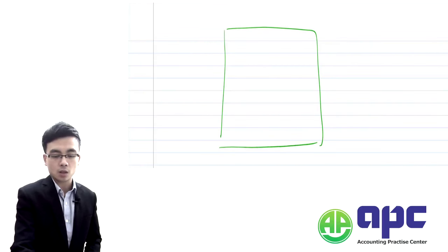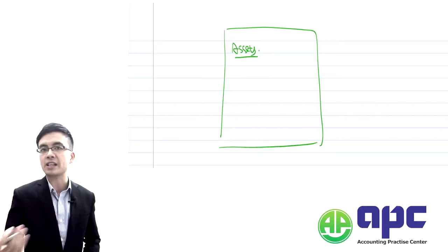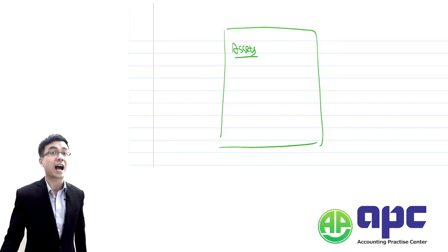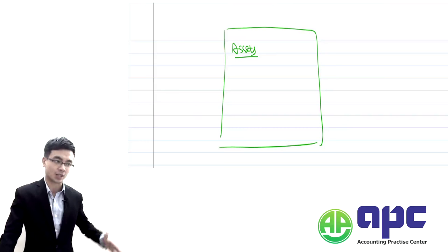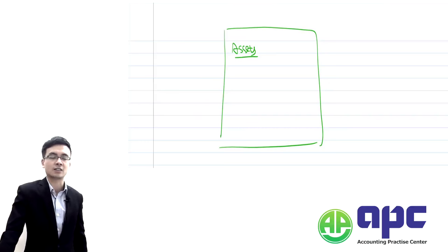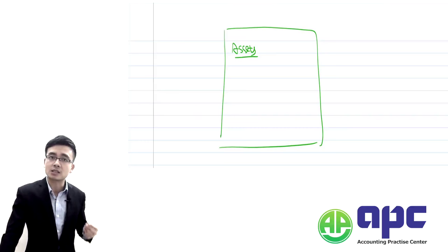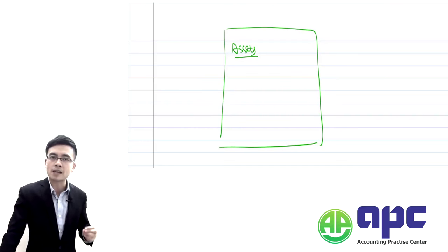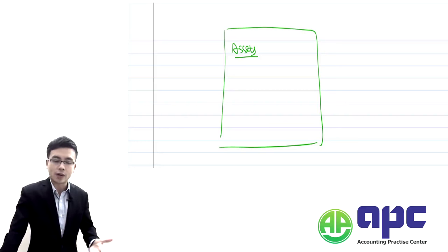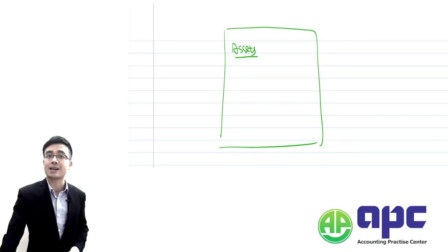So within your SFP — the balance sheet — we have the asset section. According to IAS 1, the Presentation of Financial Statements, we follow the principle-based approach. That means we can call it the statement of financial position or the balance sheet — it's entirely up to you.